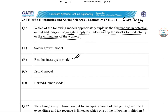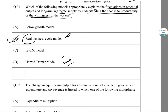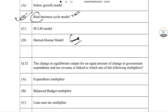ISLM hum log jante hain — it's a money market formulation with monetary supply with respect to the investment-savings curve or fiscal policy changes. Harrod-Domar model is a growth model. So our answer to question 21 is B — Real Business Cycle model.